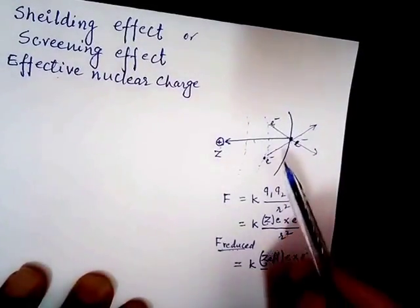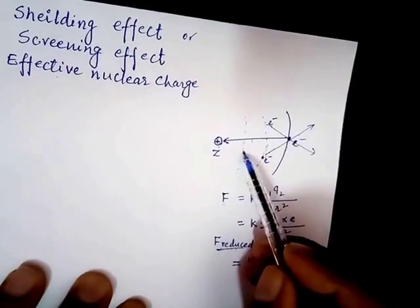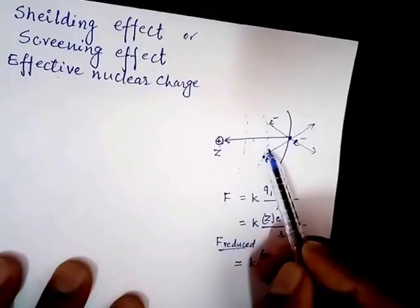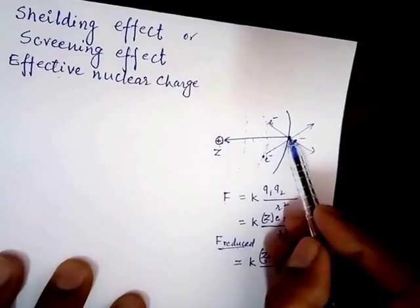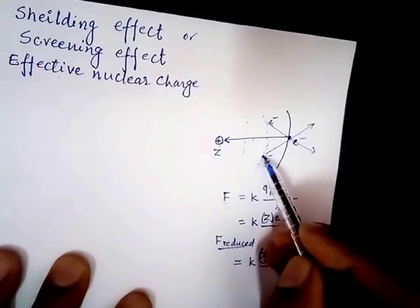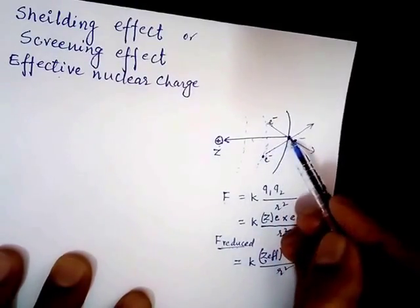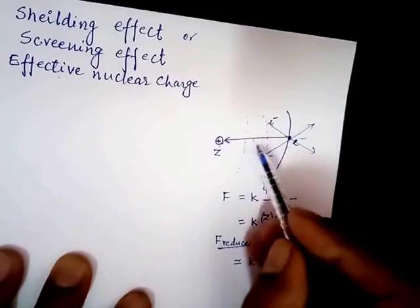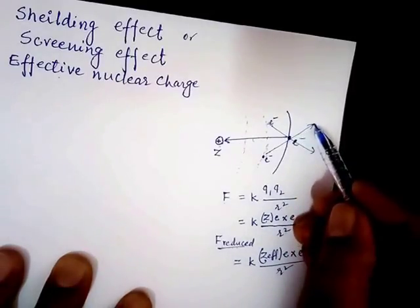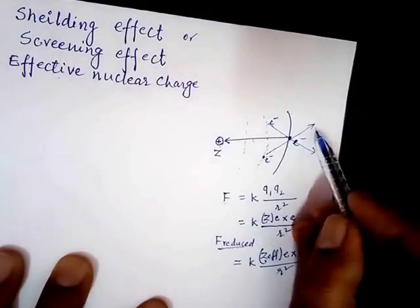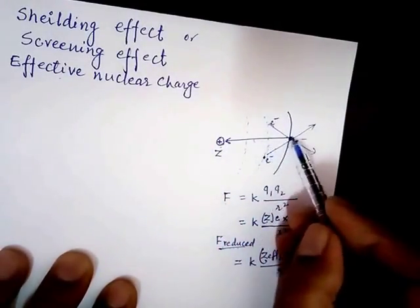We also have to look at the core electrons. There are inner shells, and the electrons present in the inner shells are known as core electrons. These core electrons will also exert some force on the valence electron. Since they have like charges, they will repel each other — all core electrons will repel this valence electron. The direction of this repulsive force is outward, away from the nucleus.